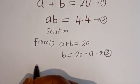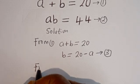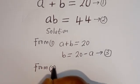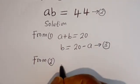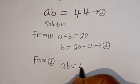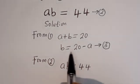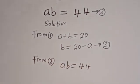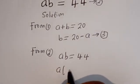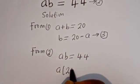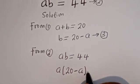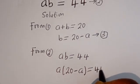Let's call this equation 3. Then from equation 2, that is A times B is equal to 44, we can substitute for B. So A times (20 minus A) is equal to 44.